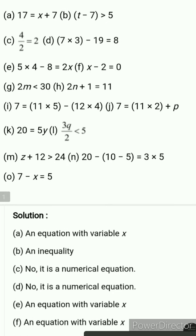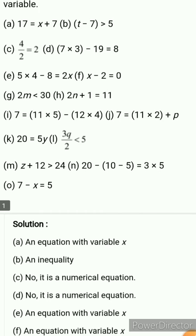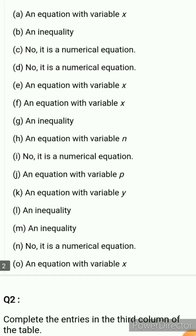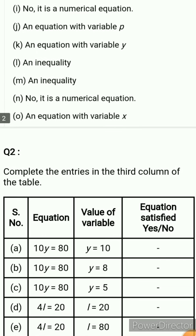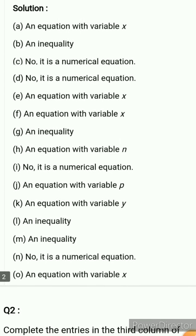And the last one is 7 minus x equals 5 — this is an equation with variable x. So the answer is: an equation with variable x. Students, these are the answers to question number 1. Just pause the video and write them in your notebook.